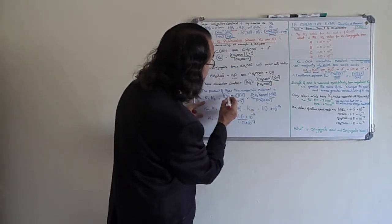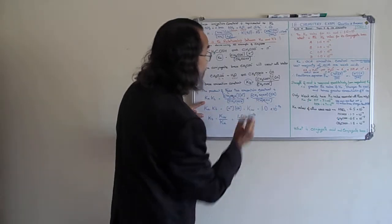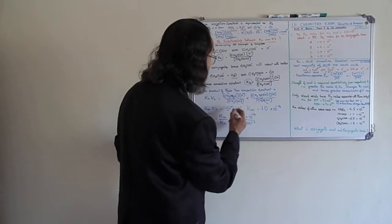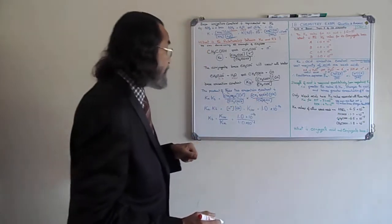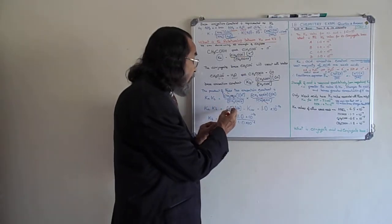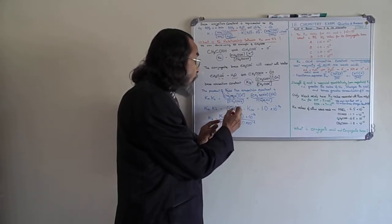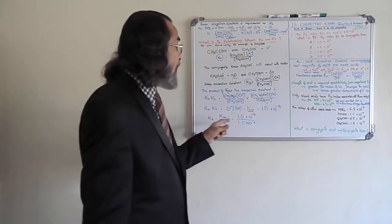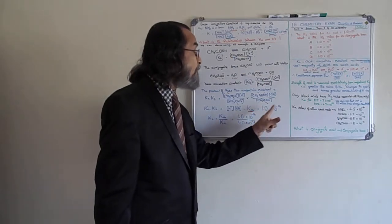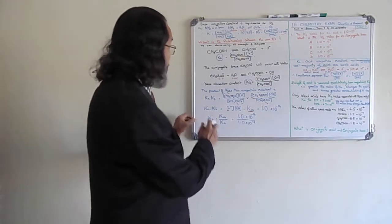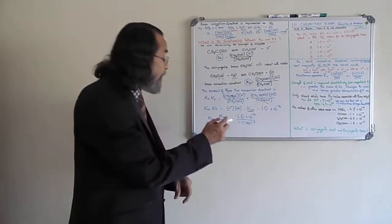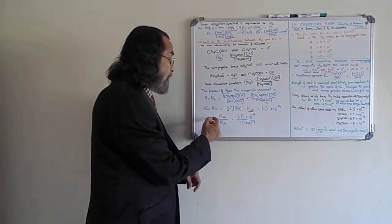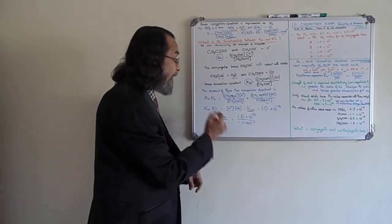After cancellation, what remains is H⁺ ion concentration times OH⁻ ion concentration. This product of H⁺ and OH⁻ concentration is known as Kw, the ionic product of water. At standard conditions, Kw = 1 × 10⁻¹⁴. Therefore Ka × Kb = Kw, and rearranging: Kb = Kw ÷ Ka.